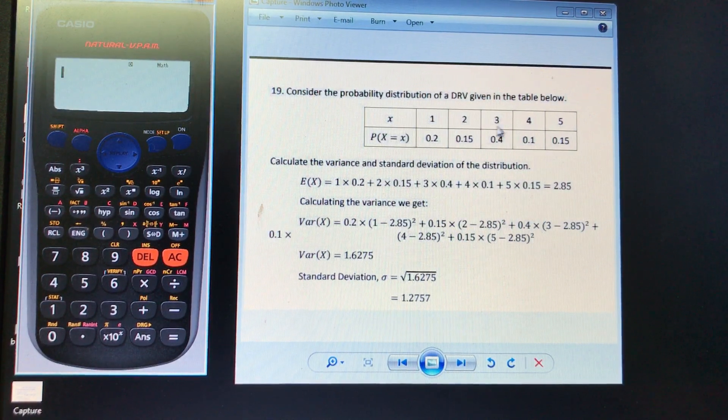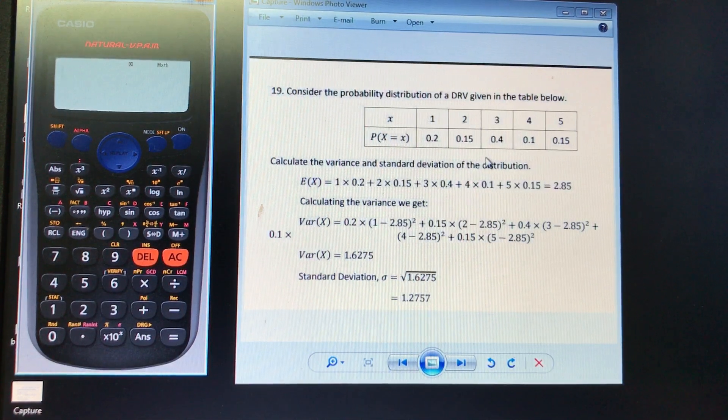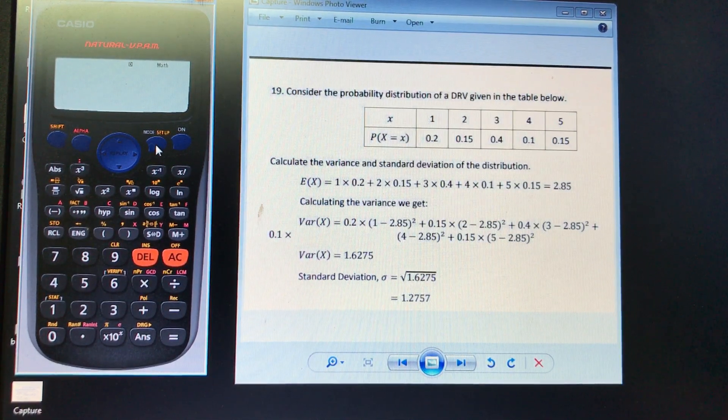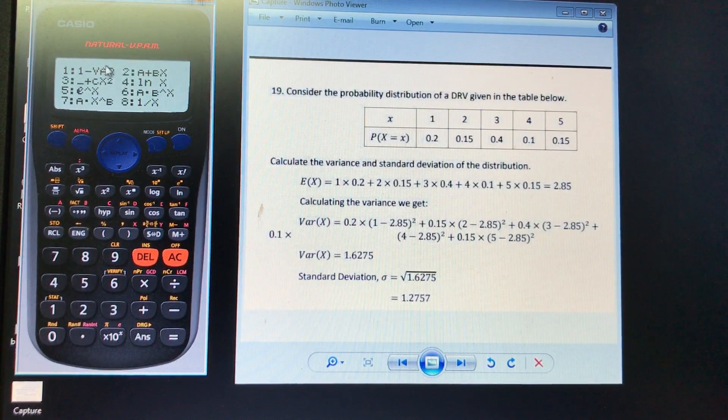So the first thing we're going to want to do is we're going to want to enter this data to our calculator, and to do that we want to put our calculator in stats mode. So we're going to go over to our mode button and press 2 and we're just going to select option 1.